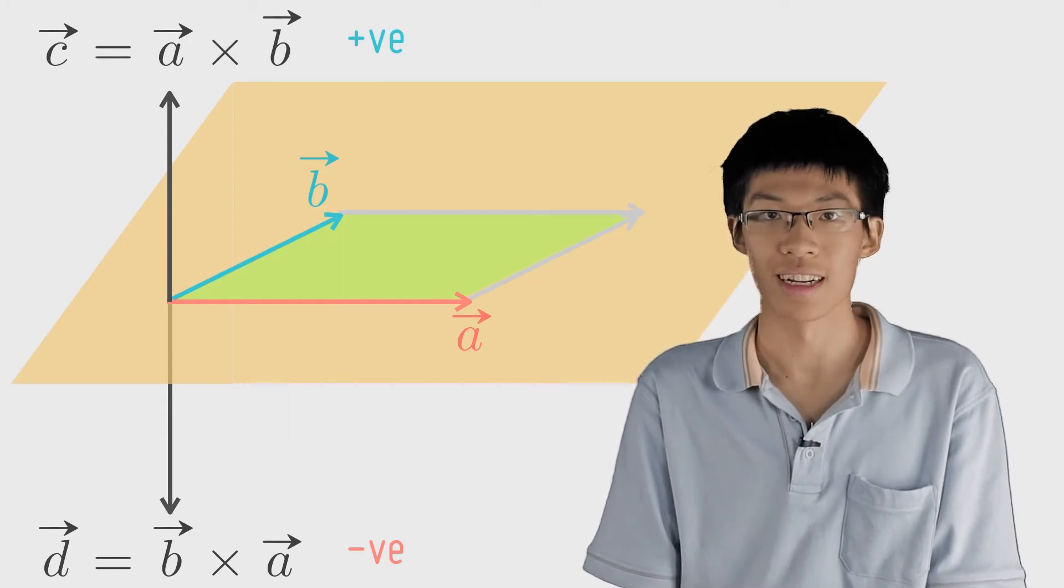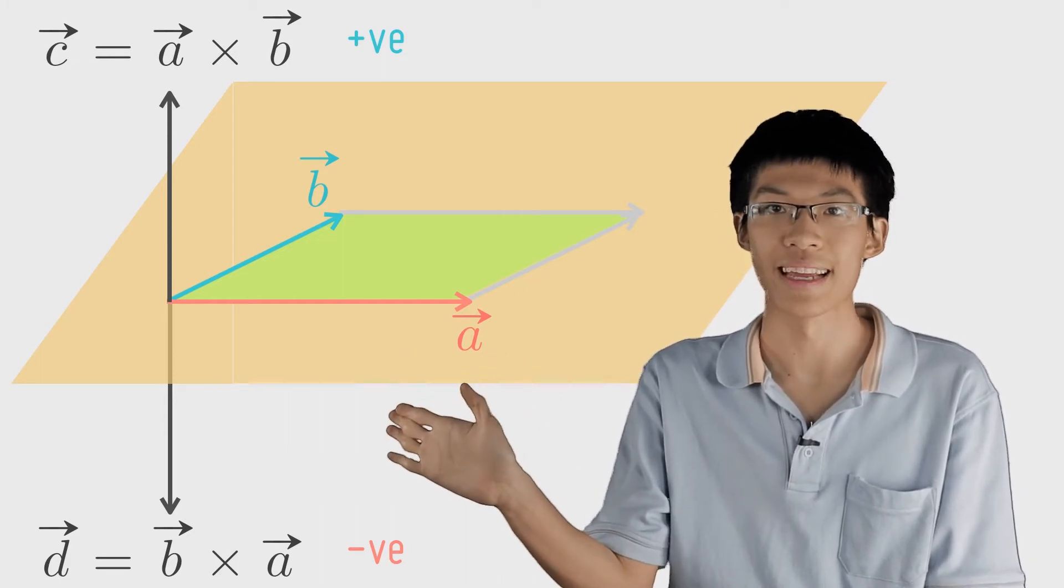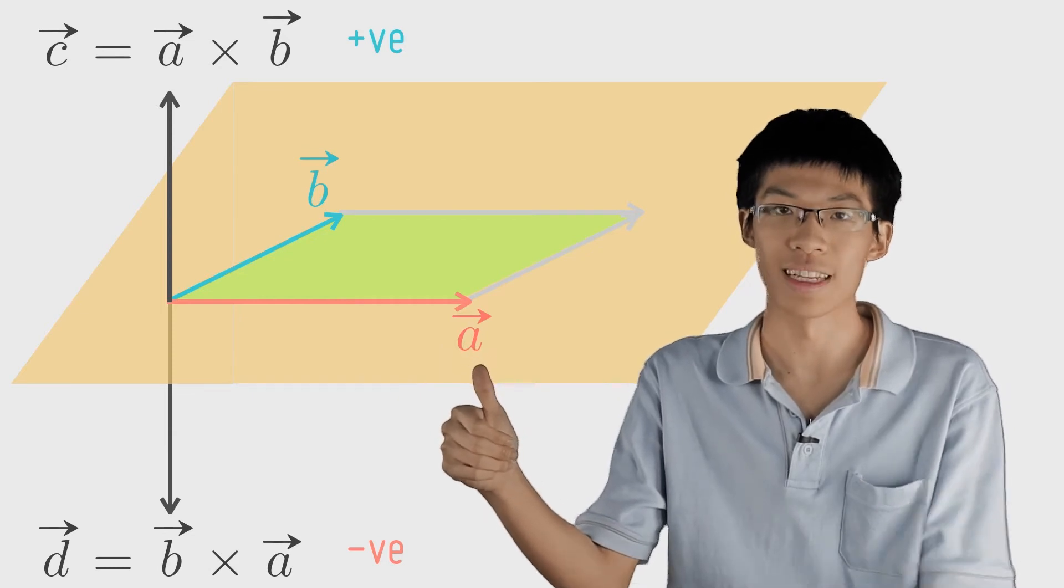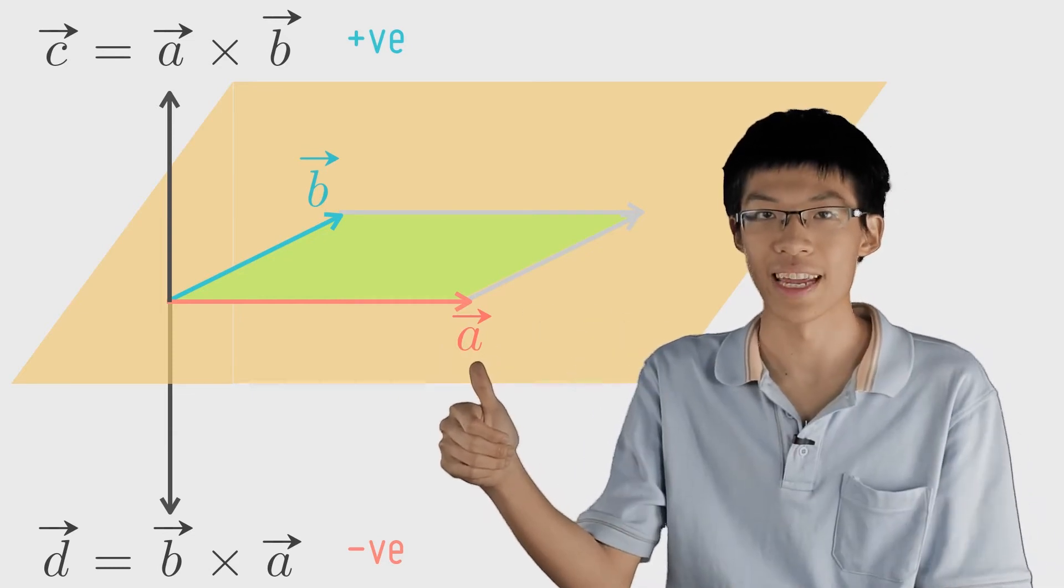We use the fingers on our right hand and wrap from a to b. The direction that the thumb points is the direction of a cross b.